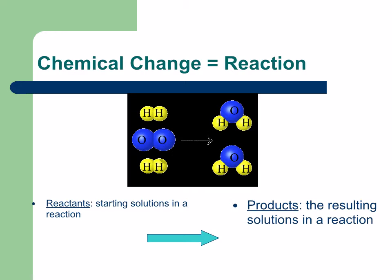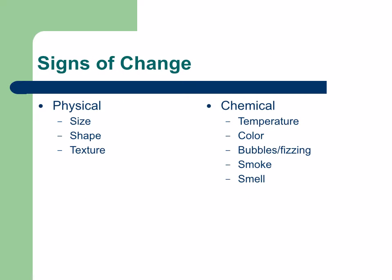In a chemical change, you have your reactants — your starting materials in a reaction — and those create products, the resulting substance. There are signs of each type of change. For a physical change, you'll see something that changes size, shape, or texture. In a chemical change, you'll see a temperature change, color change, bubbles or fizzing, smoke, or a smell. These are normally good indicators. There are some exceptions — like ice warming to water involves temperature change but is still a physical change — but otherwise, this should give you a good idea of how to figure it out.